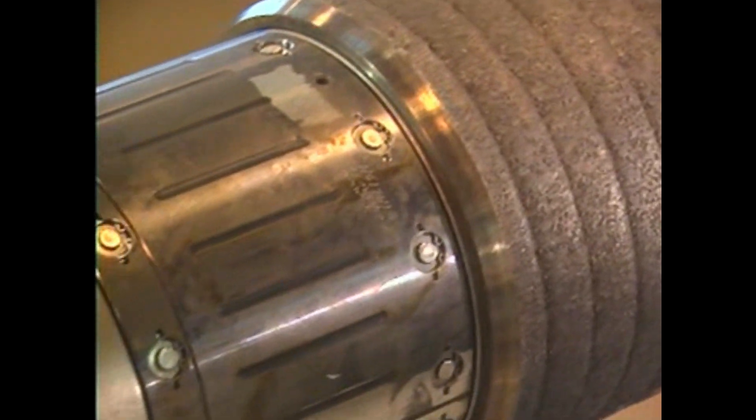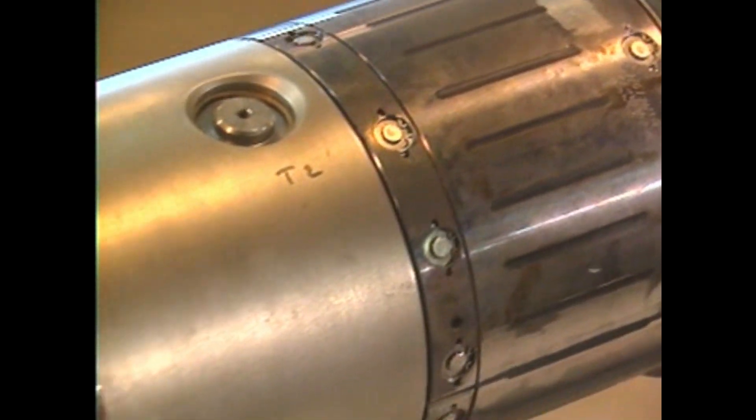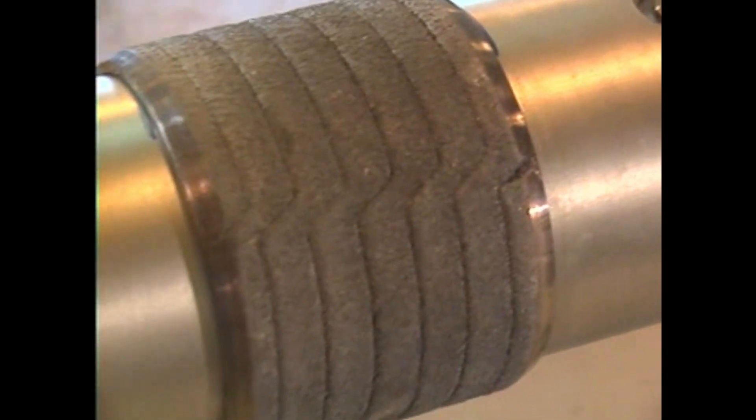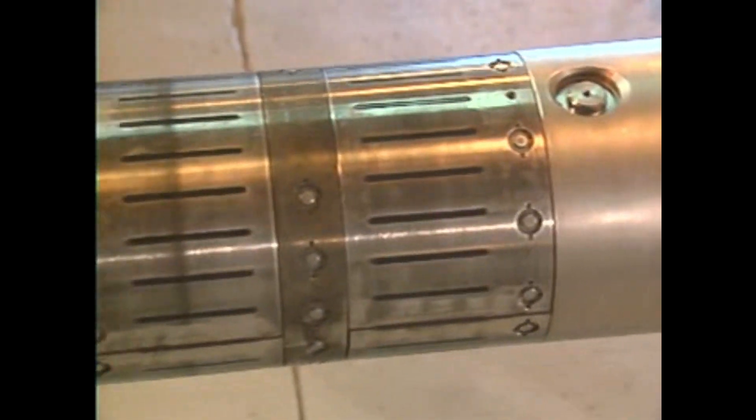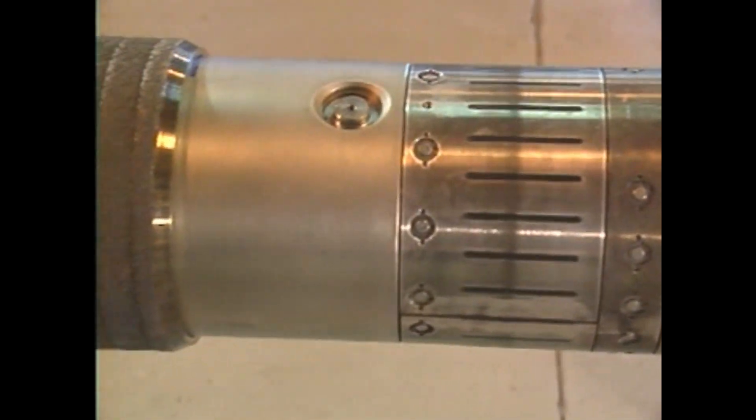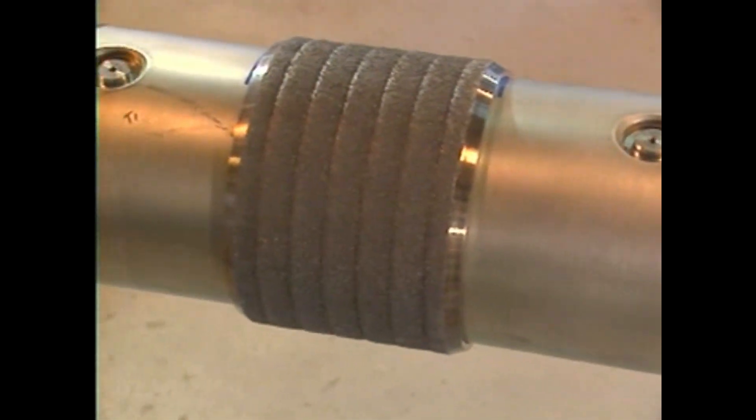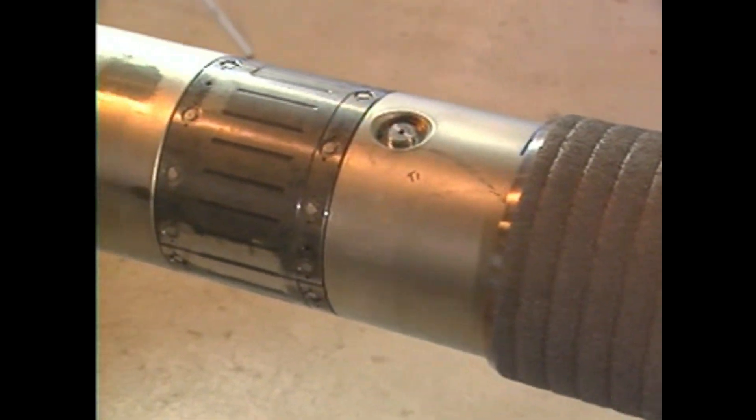Logging while drilling or LWD tools operate on basically the same principles as conventional wireline logging tools. The dual resistivity device shown here contains a gamma ray tool and two sets of transmitters and receivers to provide shallow and deep resistivity readings.